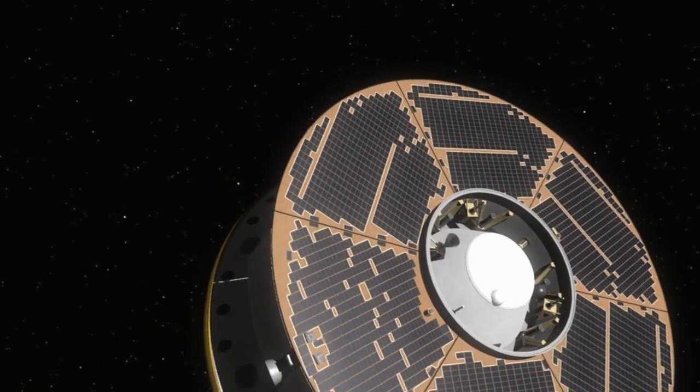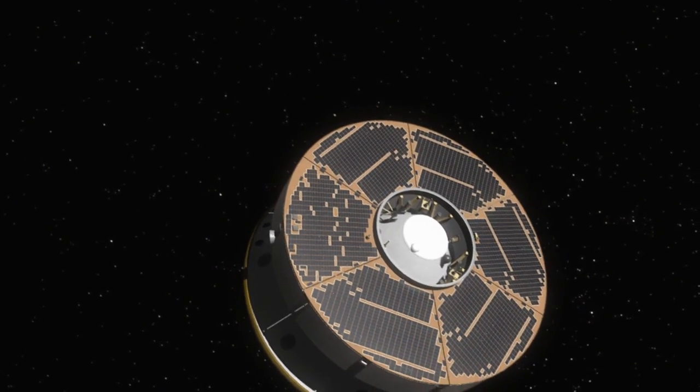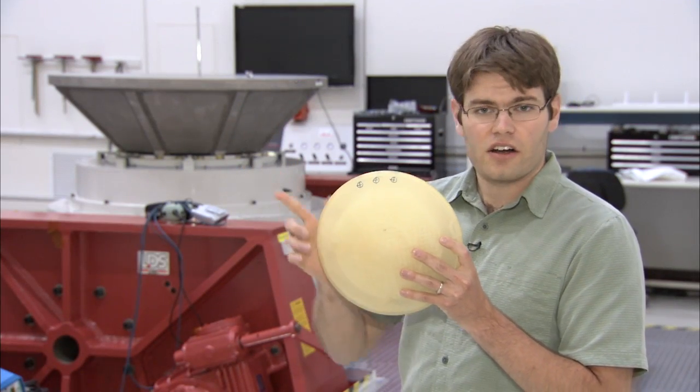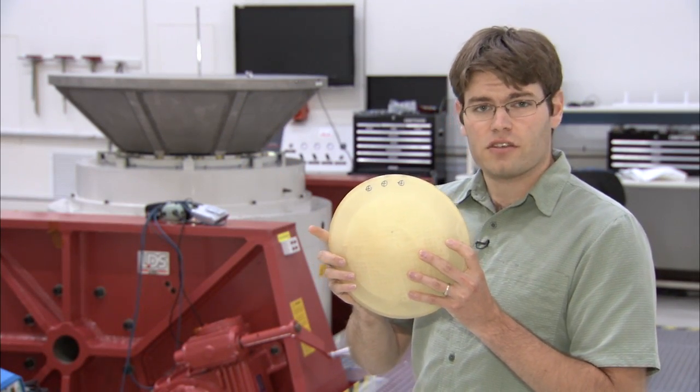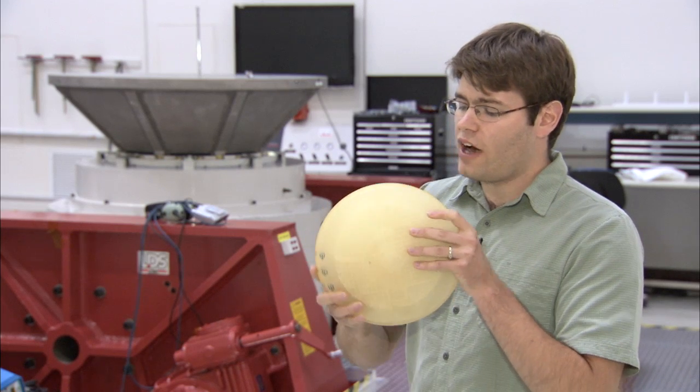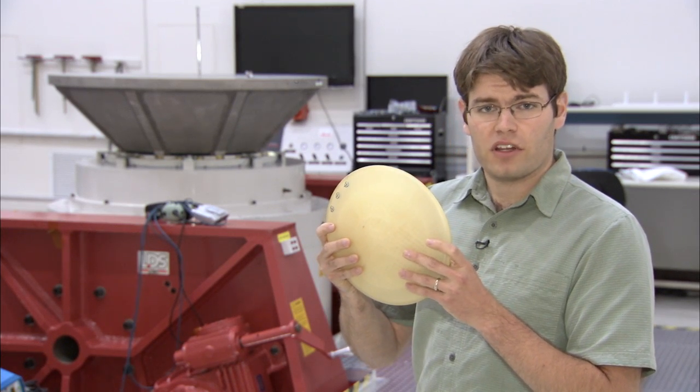During the cruise phase, as we're flying through space to Mars, the vehicle is rotating and using a camera, a star scanner, to navigate by taking pictures of the stars. If we're rotating and wobbling, we can't get a good track on the stars, and we won't be able to properly navigate.